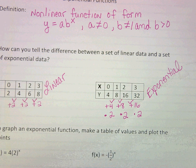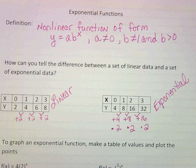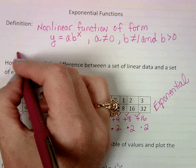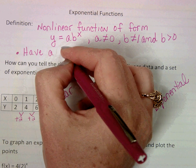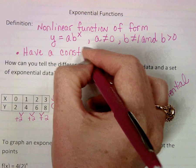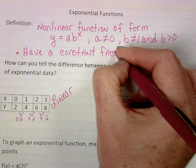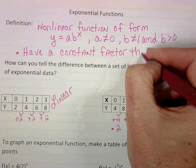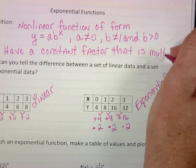Okay? So one thing, this is still a constant factor. So one thing we might want to add in with our definition is that we still have a constant factor, but the constant factor is multiplied.